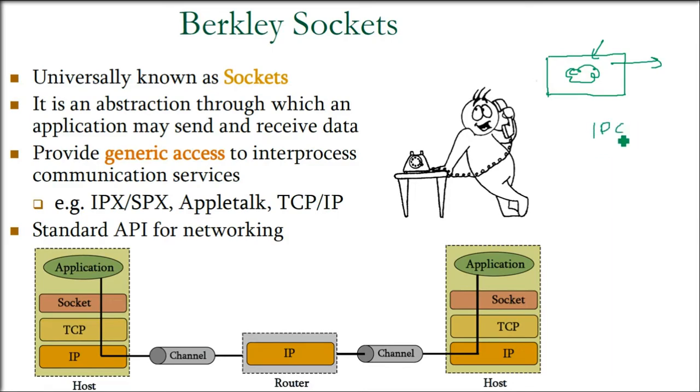This is a generic access - generic means it's not fixed to any server, any particular company or proprietary. That is inter-process communication services can be done. It can be IPX/SPX, AppleTalk, TCP/IP - any. It's for every kind of inter-process communication services. Generic, the standard API for networking.